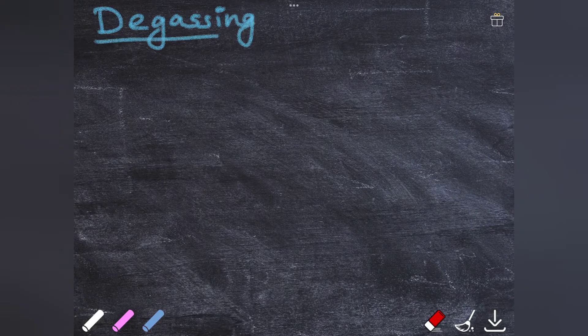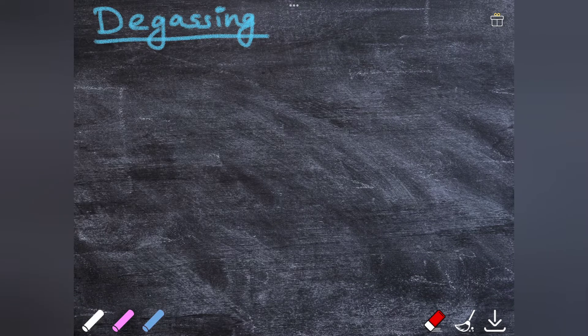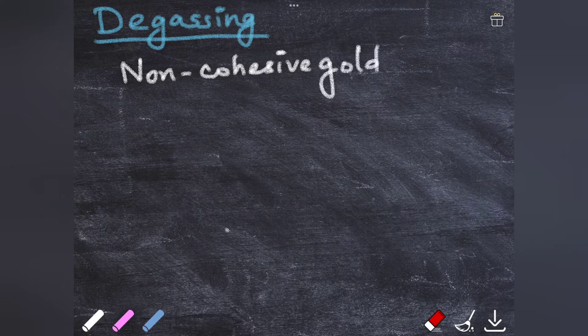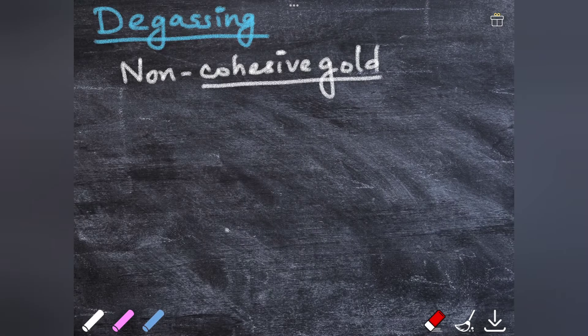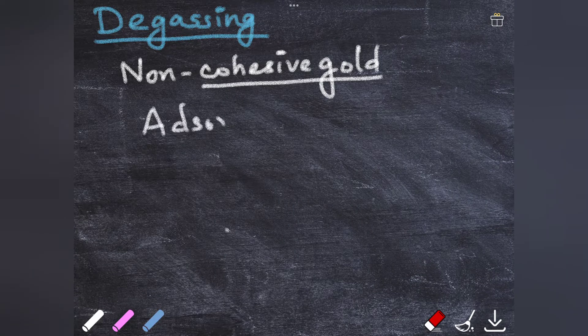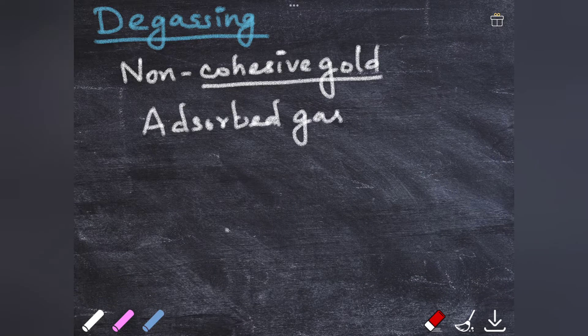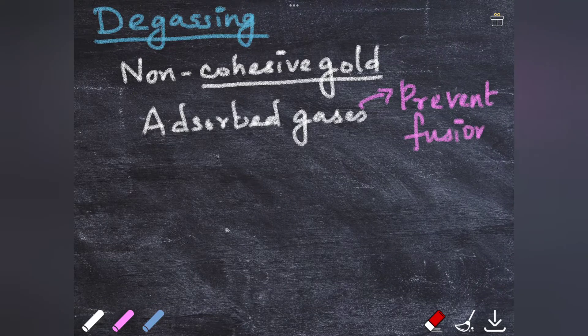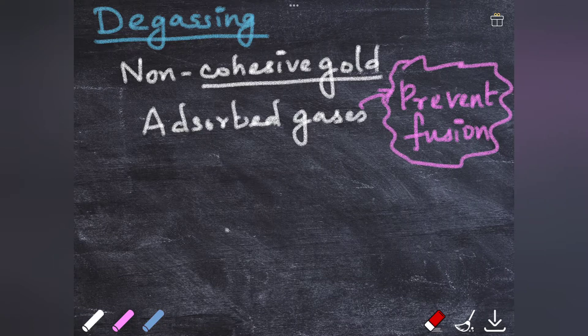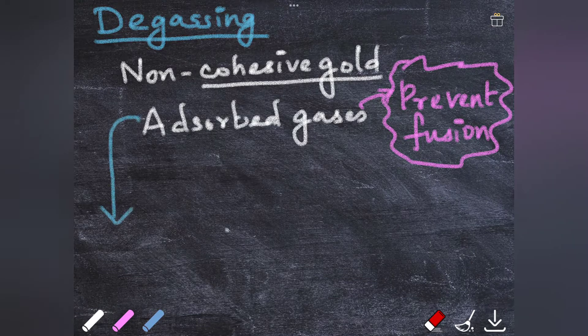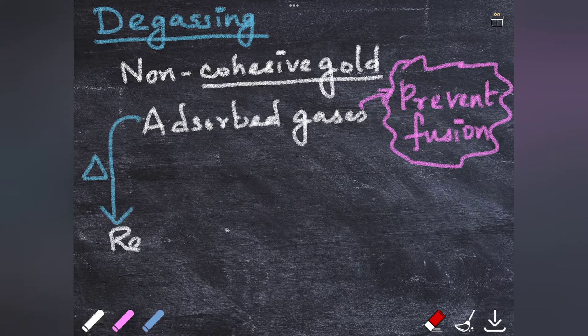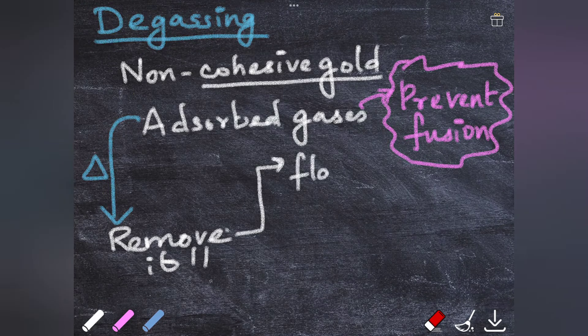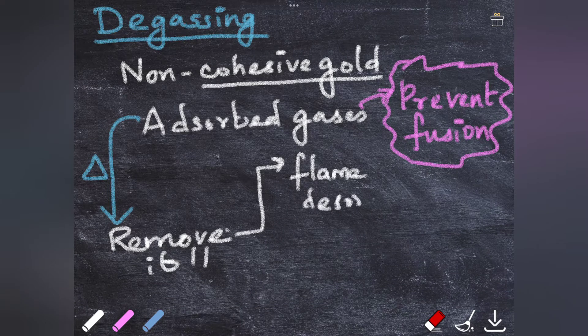So what is degassing? The process of degassing is mainly done for non-cohesive gold which inherently has impurities absorbed on the surface. Even cohesive gold can absorb gases from the atmosphere. These adsorbed gases will prevent the fusion of the gold pieces, so we have to find a method to remove it. This can be done by heating the gold prior to compaction.